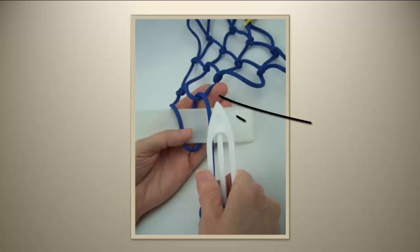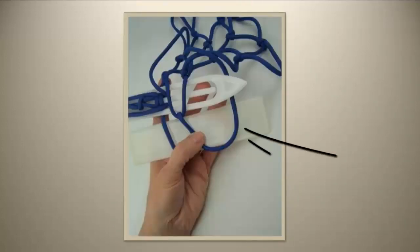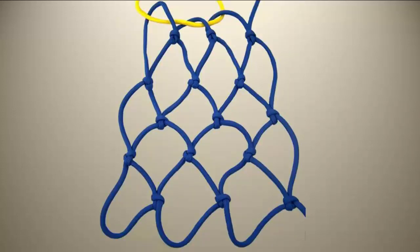Or you can go up through a loop in the previous row and then through the loop formed on the right. The blue piece of netting was tied using this method.